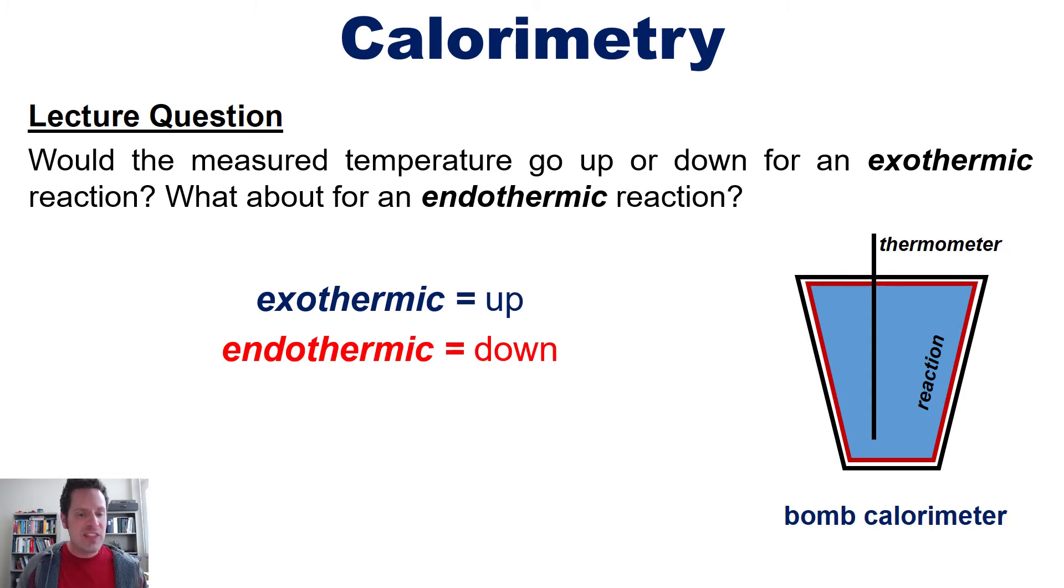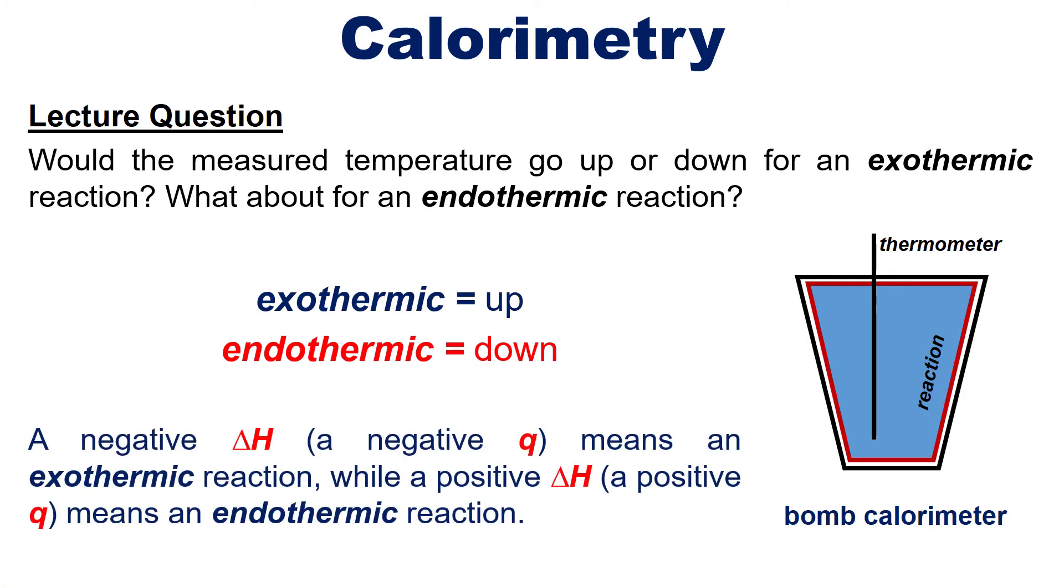Now again, because delta H, or change in enthalpy, is equal to Q for constant pressure systems, a negative delta H, or negative Q, means an exothermic reaction, while a positive delta H, or positive Q, means an endothermic reaction. Fair enough?